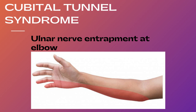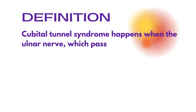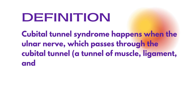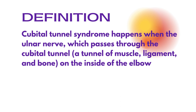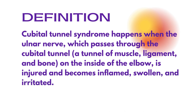Assalamu alaikum. This video is about cubital tunnel syndrome, basically ulnar nerve entrapment at the elbow, which leads to pain in the elbow, in the little finger, and somehow in the ring finger. The definition states that cubital tunnel syndrome happens whenever the ulnar nerve on the inner side of the elbow is injured, becomes inflamed, swollen, or irritated. This ulnar nerve passes through the cubital tunnel, which consists of a muscle, a ligament, and a bone.